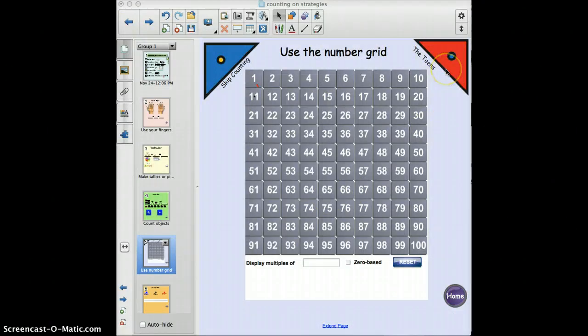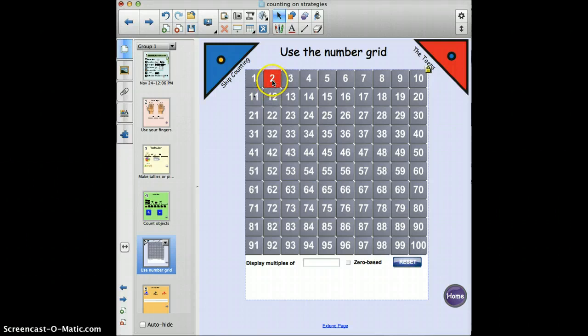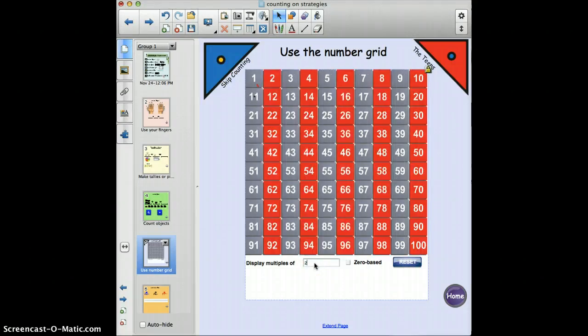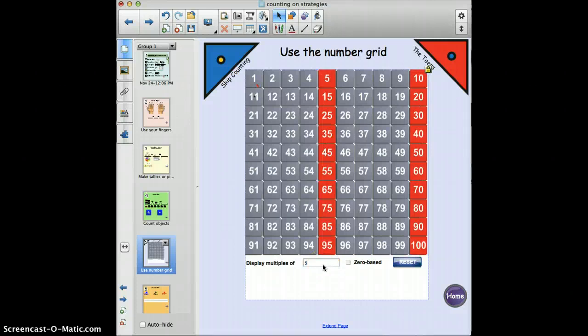But the number grid itself, they can use to count. If you click on it, you can start maybe at two and they want to count three more - one, two, three - and they would get five. Or maybe they're trying to count by twos, in which you could just type in the number and it'll show you all the multiples of twos. Maybe they want to see by fives - you have to reset first - and it shows the two rows that make five. So that's another tool they can use.